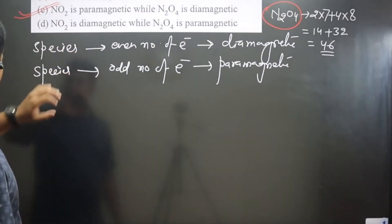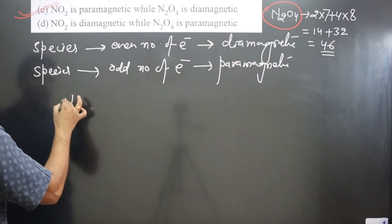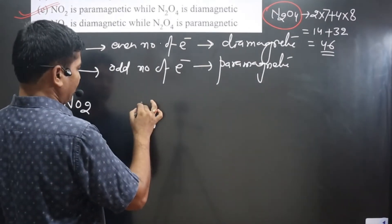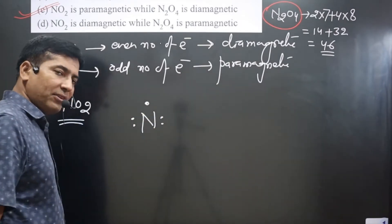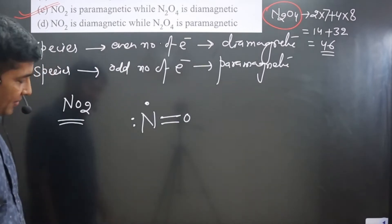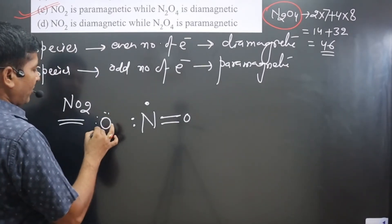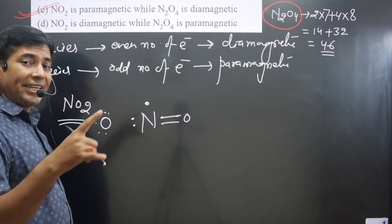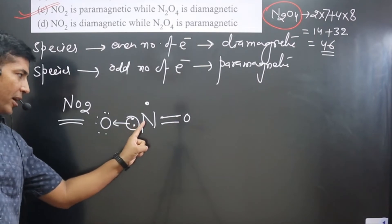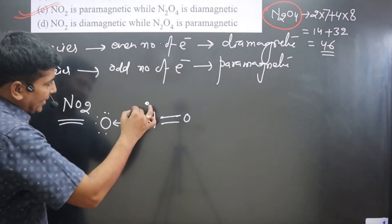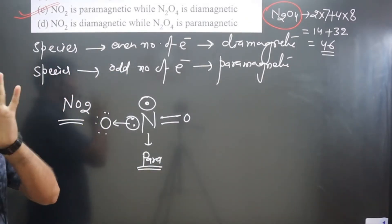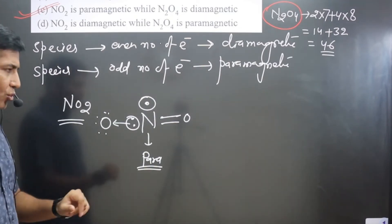Let's draw the structure of NO₂. Nitrogen has 5 valence electrons. Oxygen can form 2 bonds. We attach one oxygen here, and one more oxygen remains. This oxygen has 6 valence electrons; if it gains 2 more, its octet is complete. So nitrogen donates electron density to oxygen via a coordinate bond, since the electron pair moves from nitrogen to oxygen. You can see NO₂ has 1 unpaired electron — that's why it is paramagnetic by nature.